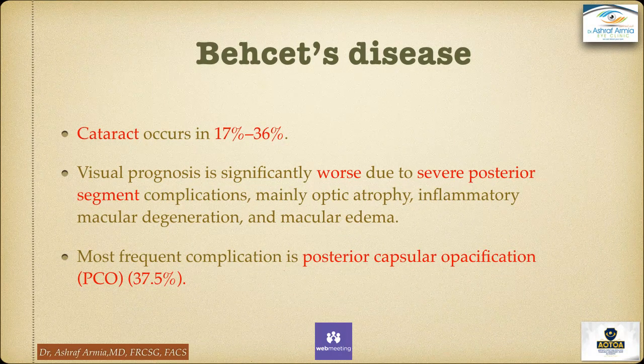The third cause is Behcet disease. Cataract occurs in about 17–30%. The visual prognosis is significantly worse, not because of the anterior segment but because of severe posterior segment complications — mainly optic atrophy, inflammatory macular degeneration, and macular edema, which commonly occur postoperatively. The most frequent complication is posterior capsular opacification (PCO), occurring in about 37–37.5% of cases. A surgical video demonstrating how to deal with Behcet disease in cataract surgery will be shown.